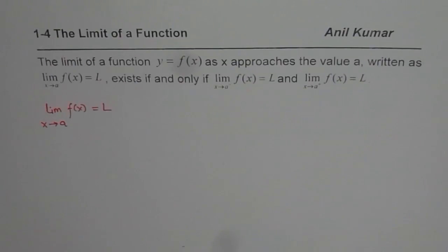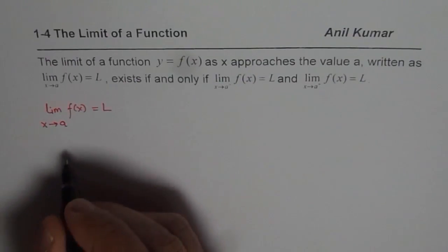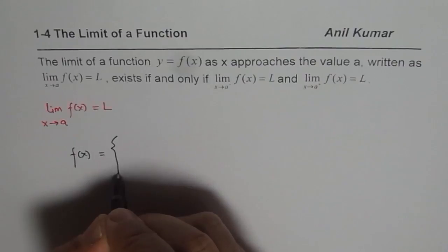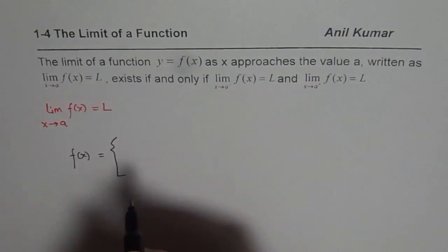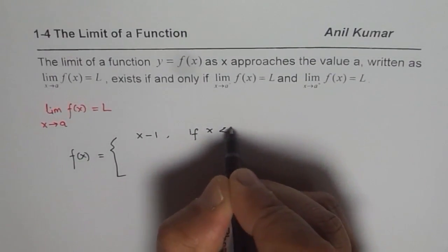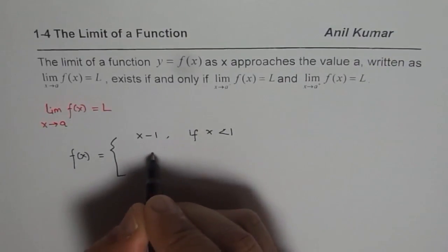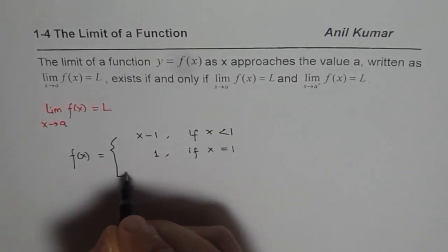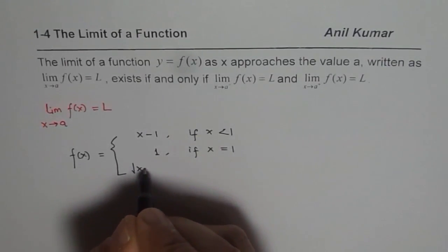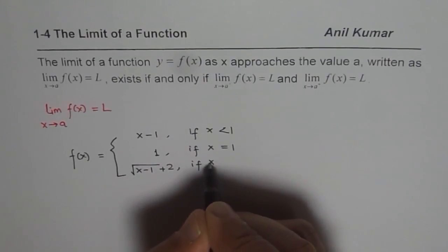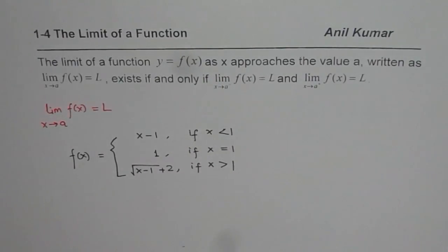To understand this, let me take a piecewise function as an example and then we will explore it further. We will take an interesting piecewise function with three pieces. The first piece is x minus 1, if x is less than 1; then f of x equals 1 if x equals 1; and square root of x minus 1 plus 2 if x is greater than 1.